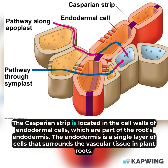The Casparian strip is located in the cell walls of endodermal cells, which are part of the root's endodermis. The endodermis is a single layer of cells that surrounds the vascular tissue in plant roots.